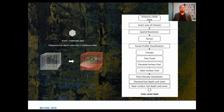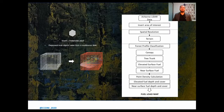Processing in voxel space brings three major advantages over point cloud space. First, the size of the data to be processed can be reduced significantly. Second, the voxel space allows establishing connectivity horizontally and vertically, which facilitates analysis. Third, the effect of different point densities can be reduced, which is favorable for fuel estimation.